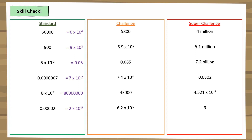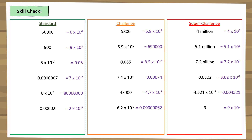Here are the answers. The standard questions involve only one significant figure. The challenge questions push a little further with two significant figures. The super challenge includes worded numbers like million and billion, requiring knowledge of place values and more significant figures. The very last question is interesting: 9 times 10 to the power of 0 — we multiply 9 by 10 zero times, and since 10 to the power of 0 is 1, it's essentially 9 times 1, which equals 9.